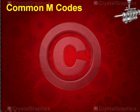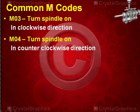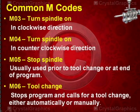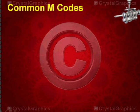Other M codes include M03, turn spindle on in clockwise direction, and M04 indicates turn spindle on in counterclockwise direction. M05 is spindle stop, usually used prior to tool change or end of program. M06 is tool change, which stops the program and calls for a tool change either automatically or manually.